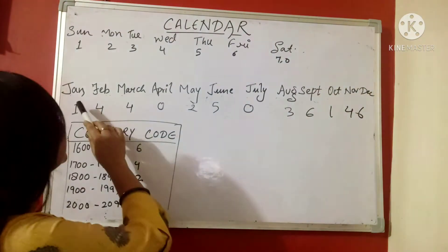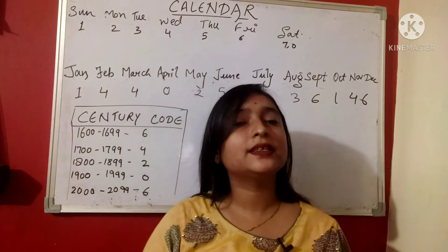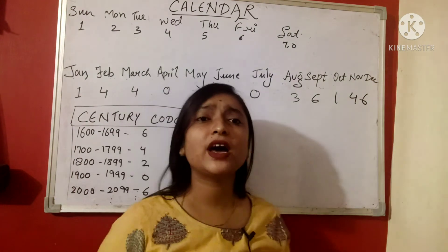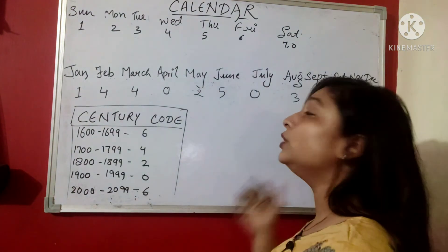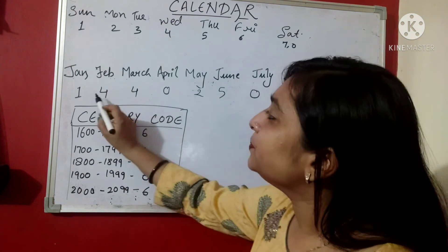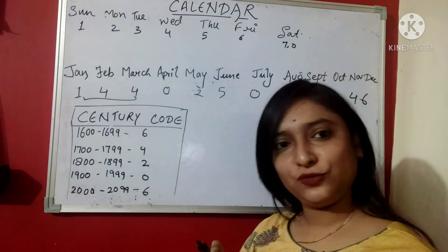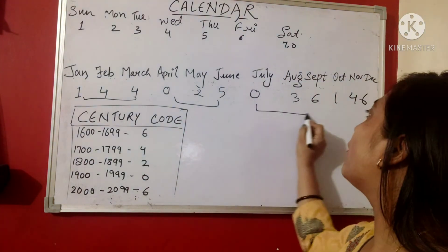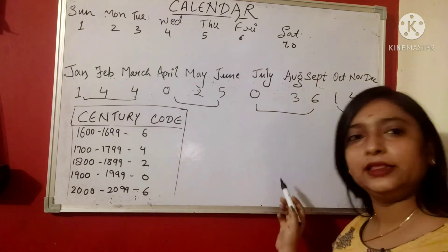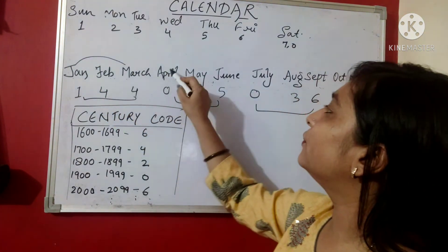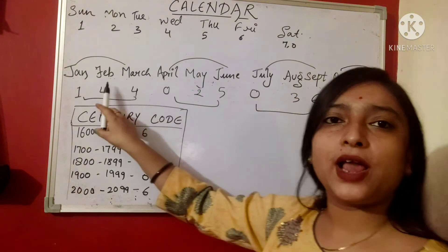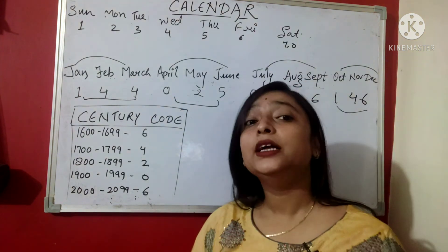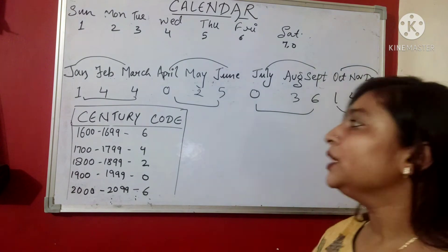Now for the months — January through December — the codes are: 1, 4, 4, 0, 2, 5, 0, 3, 6, 1, 4, 6. To remember them, group them into triplets: 144, 025, 036, 146. The pattern is 12², then 5², then 6², and then two more than 6. This makes the month codes easy to memorize.